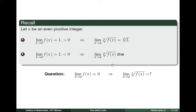For this part of the lecture, we first recall a result from the first lecture concerning radicals of functions where the index is an even integer. Suppose that the limit of the function as x tends to a is equal to l. We considered two cases: one case where l is positive and the other where l is negative. When the limit is positive and the index of the radical is even, to get the limit of the nth root of f as x tends to a, all we need to do is take the nth root of the positive limit l.